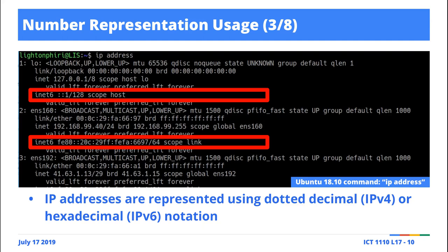It turns out there are bodies — authority figures — that have been set up to issue these network addresses. If you look at this particular example, the IP addresses you're seeing are for a server — a server computer system which hosts our LIST website. This is the public IP address that the outside world sees. When trying to access whatever service we have on the list.unza.zm server, they access it using that IP address.